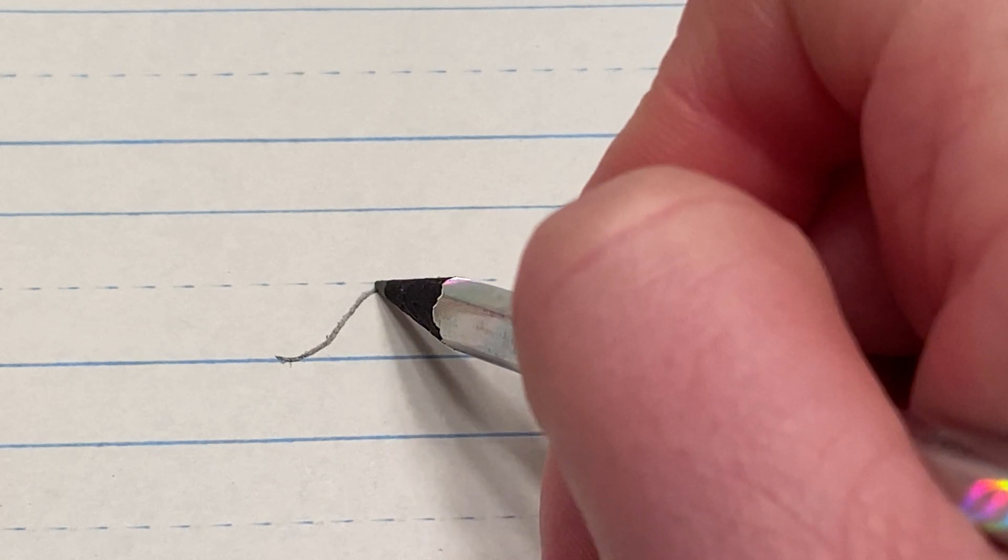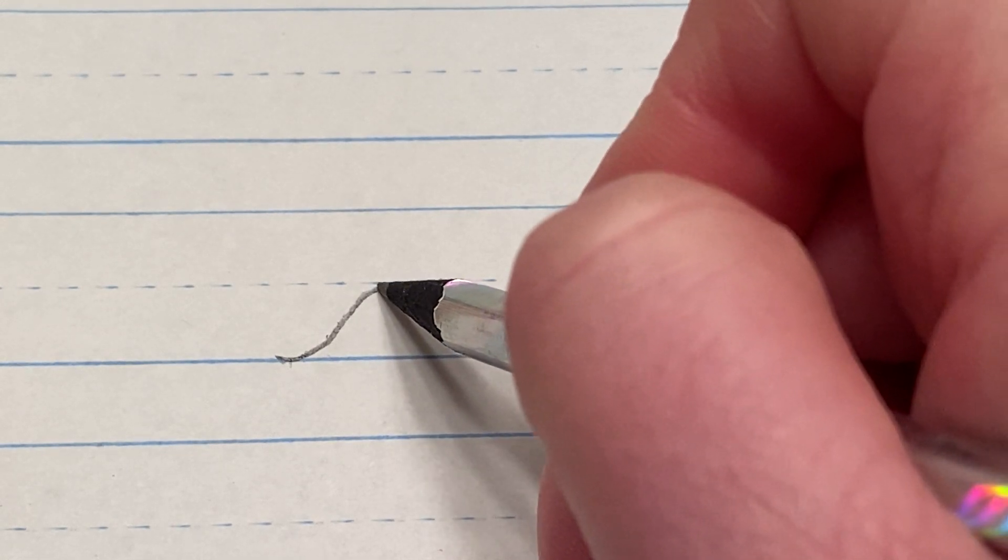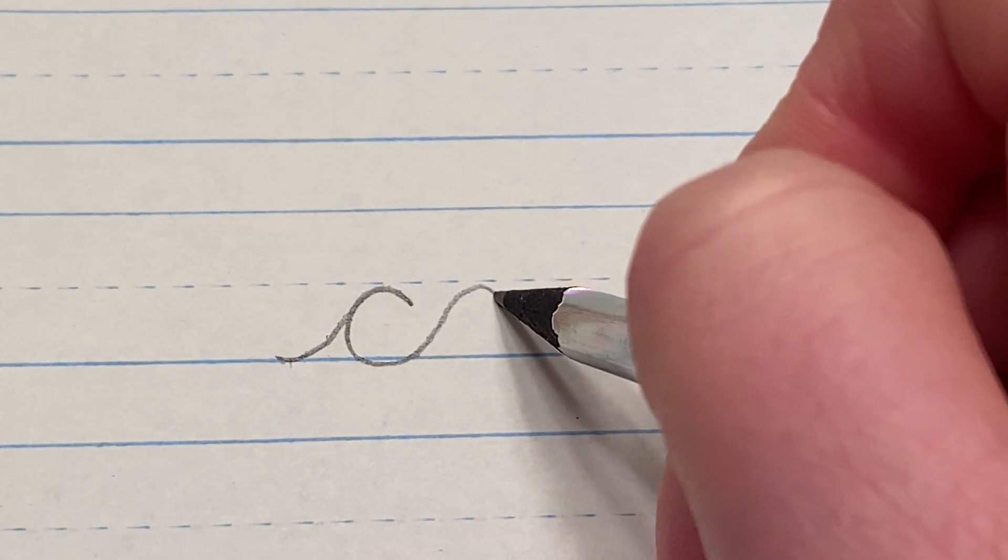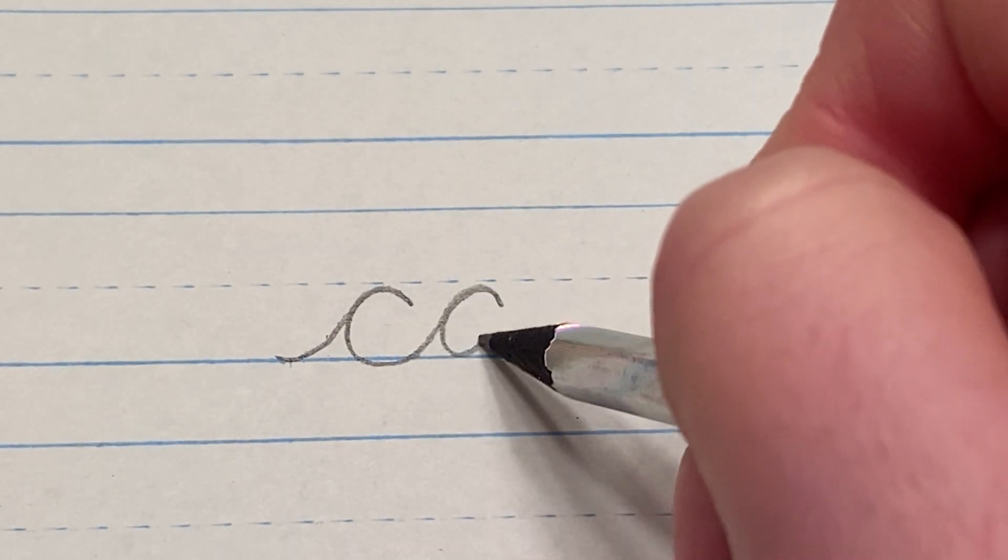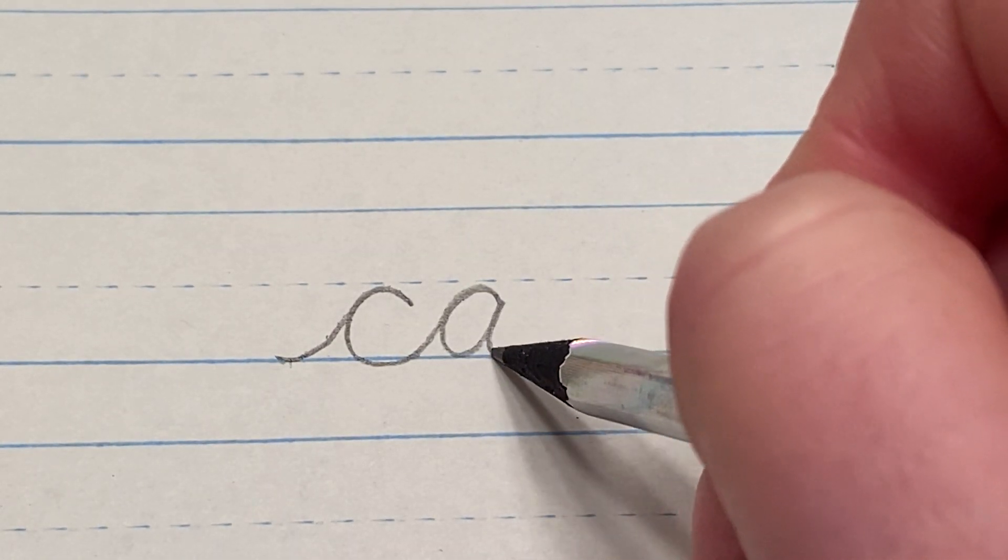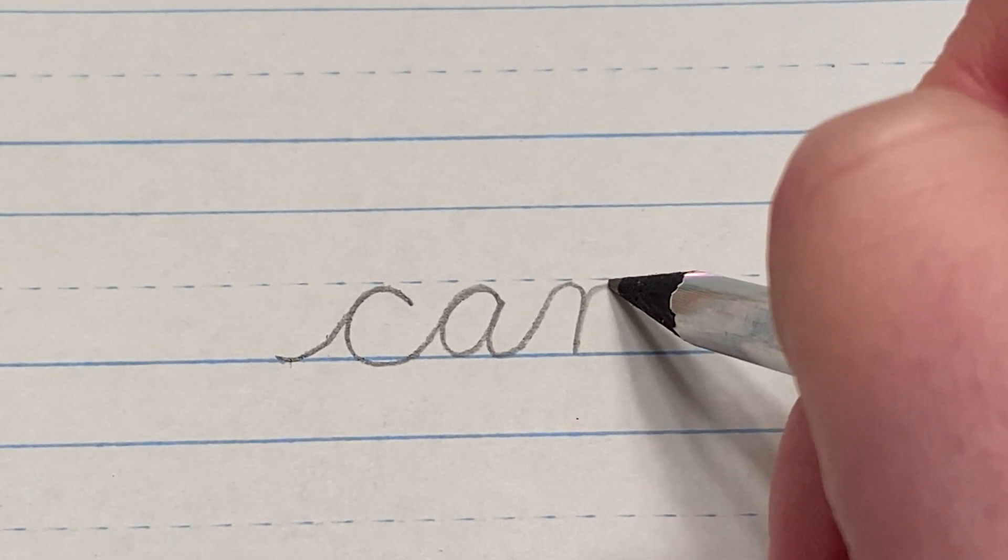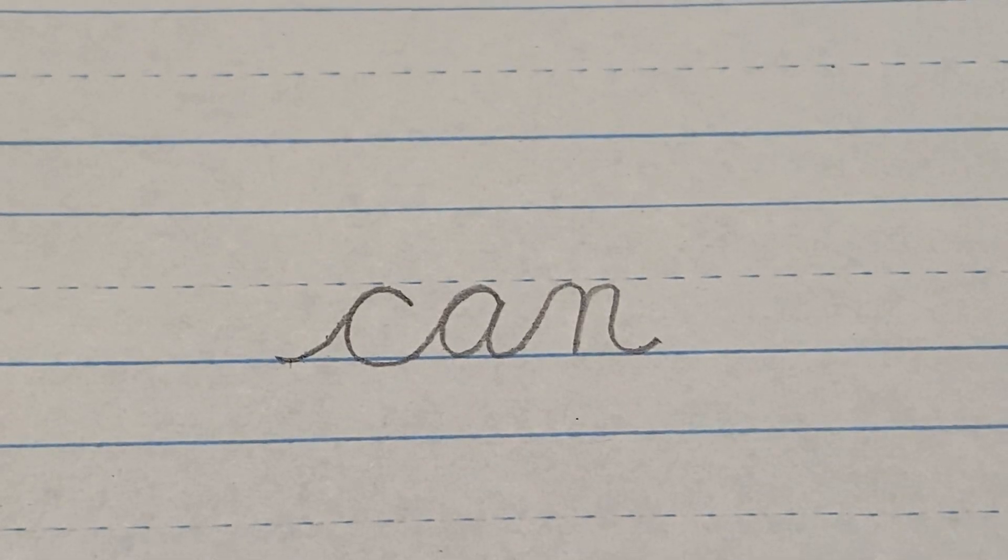For this one you start down at the floor, you go up to the middle, a little wave, go back around and you go straight into the A. The next letter, the last letter is N. You're going to do two humps on the N and that's can.